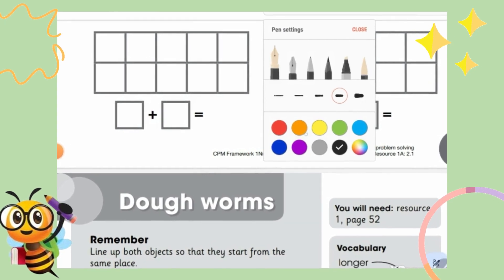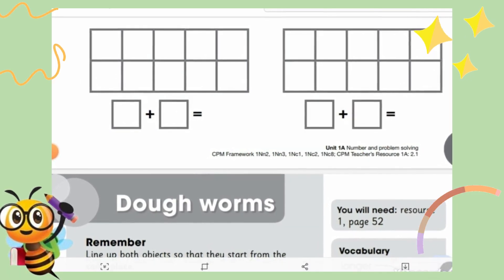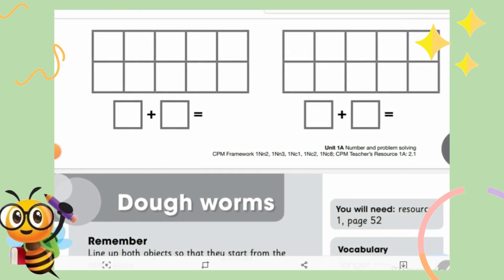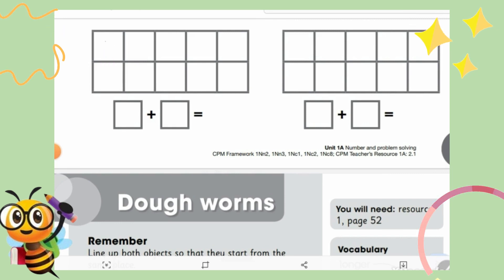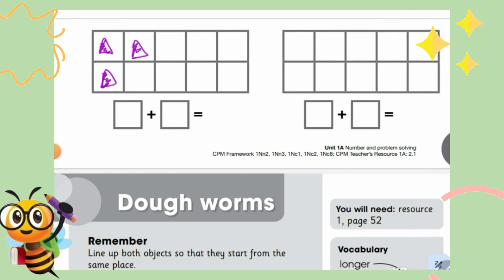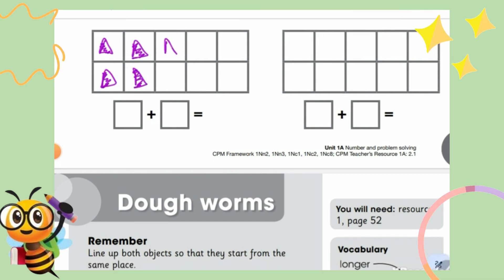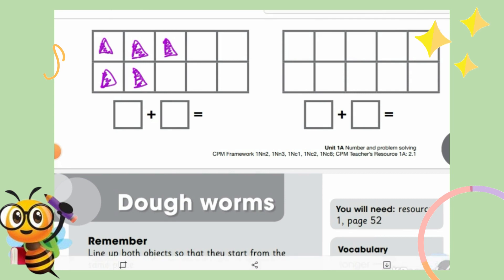Moving on to the last two. I am going to use purple again and make triangles. The last one was four, so now we are going to make five triangles: one, two, three, four, and then five. So five purple triangles — I made them.